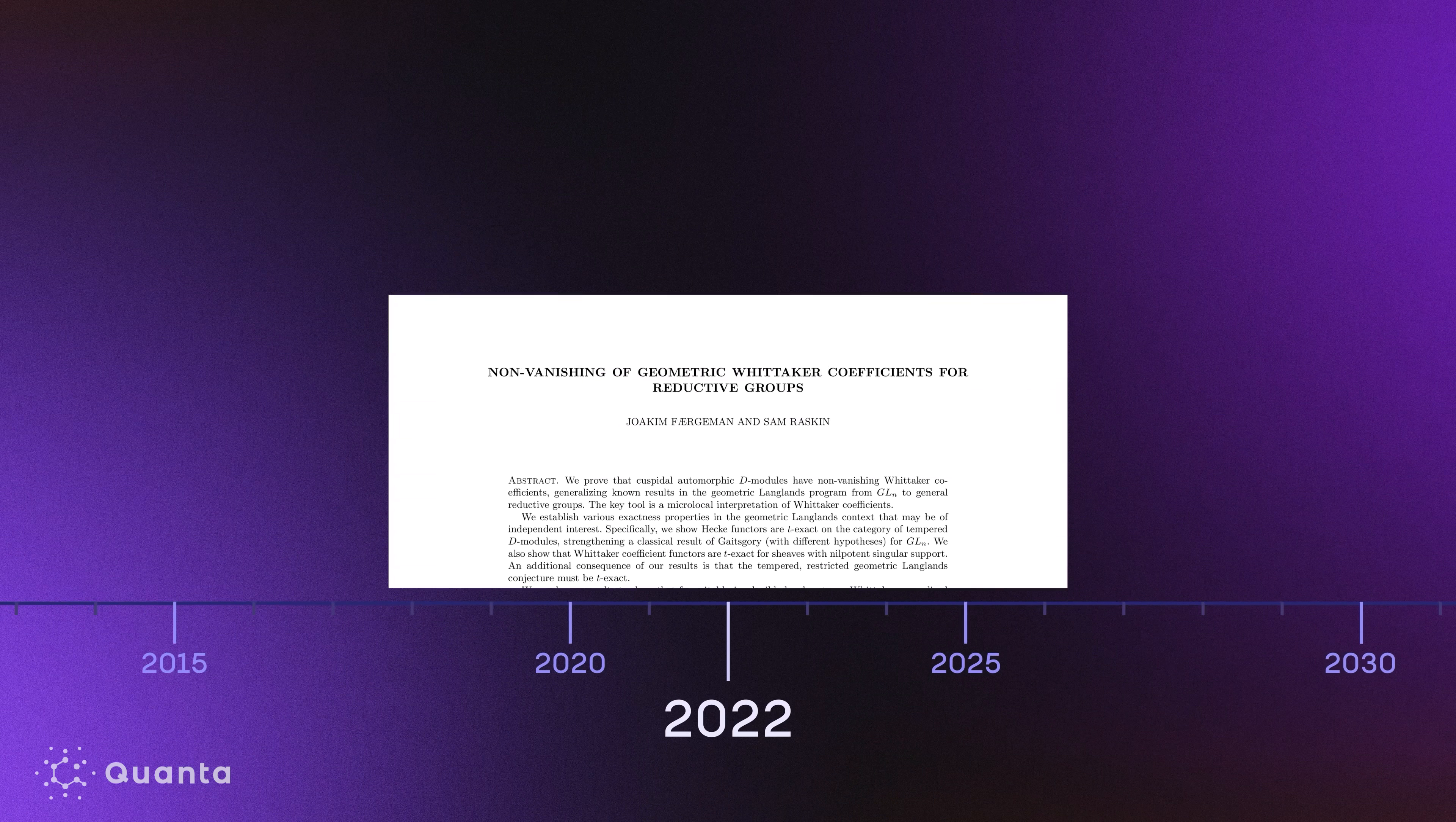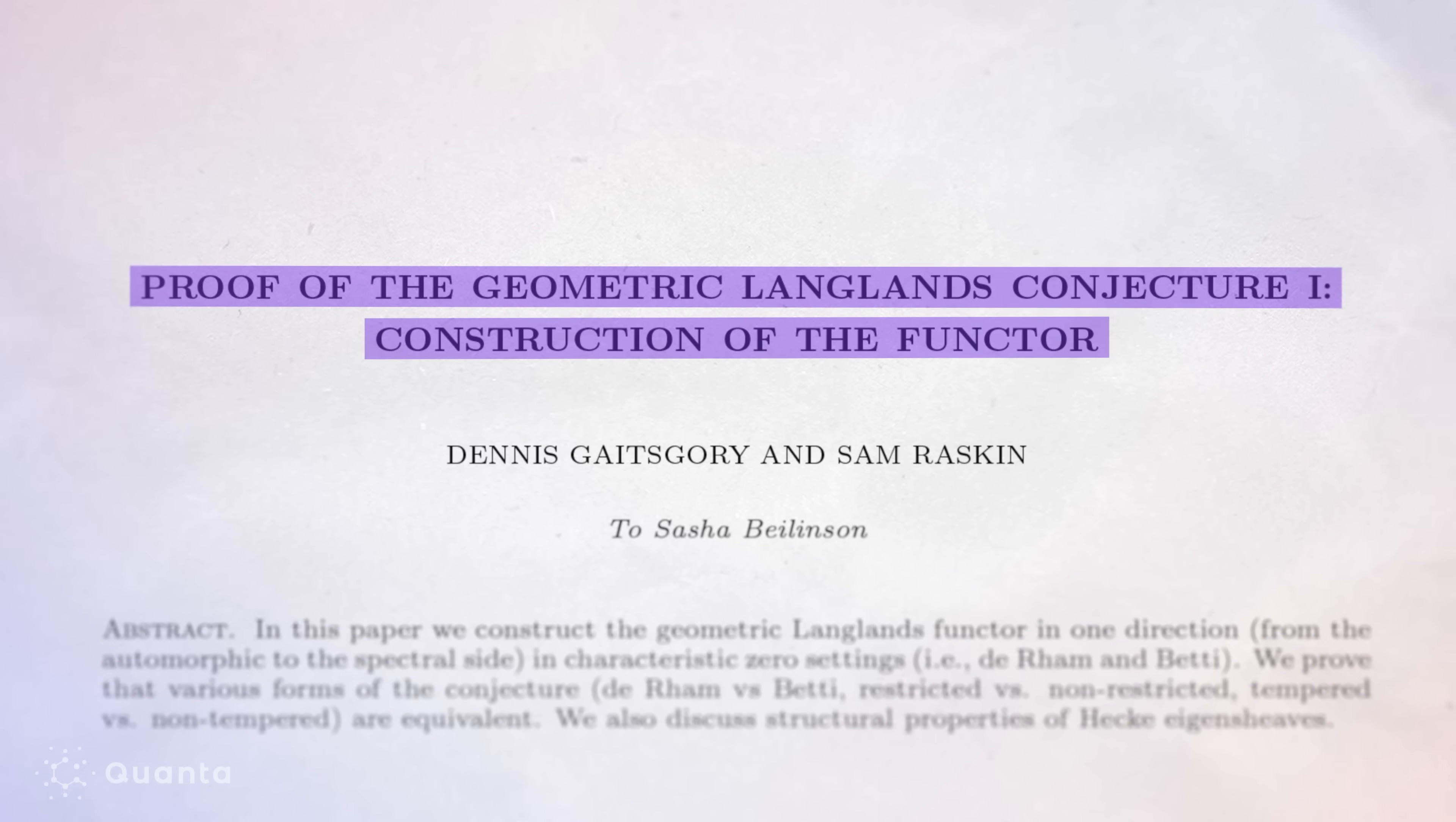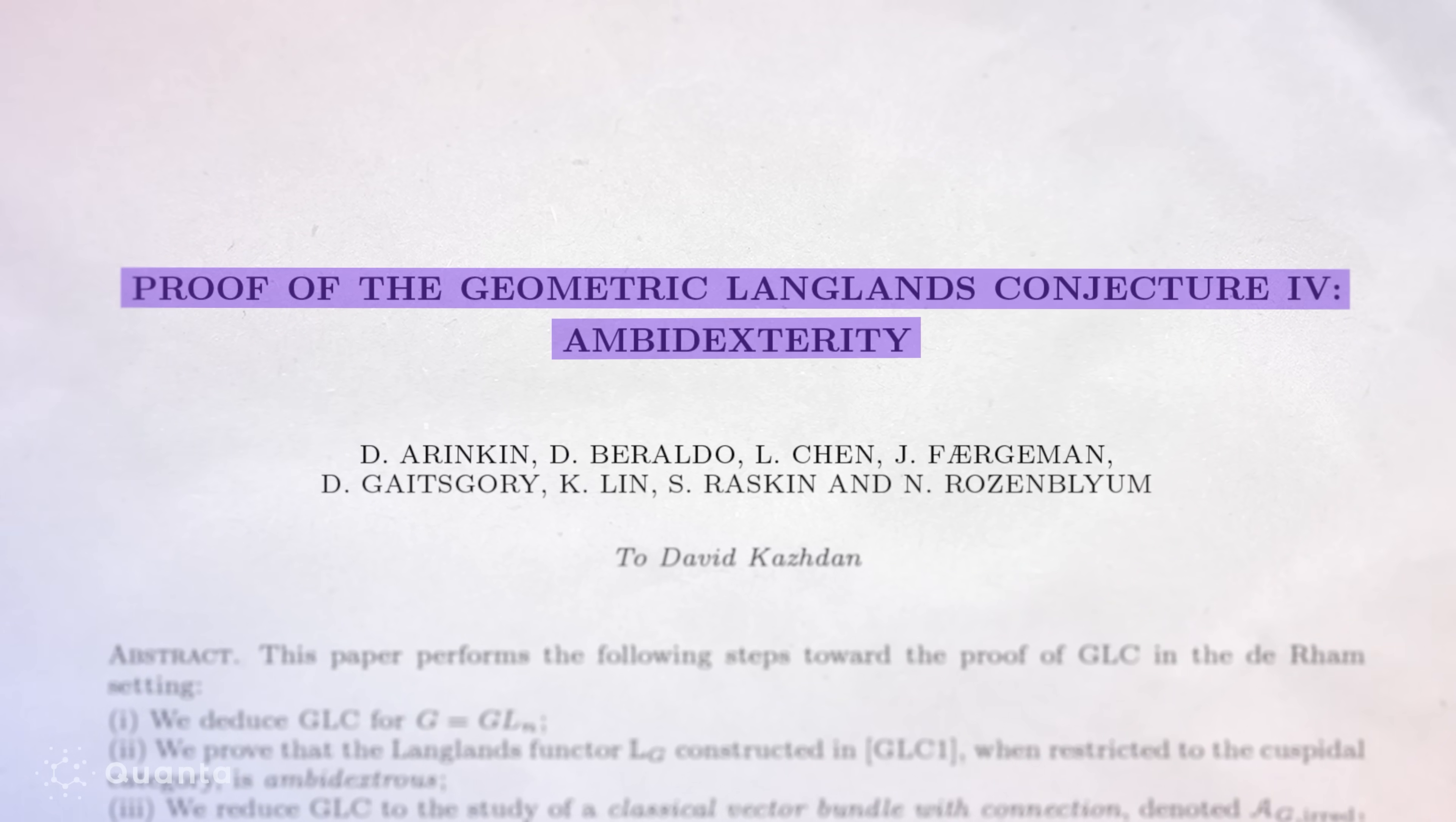In 2022, Raskin and his own graduate student finally proved this, completing Gaitsgory's fundamental diagram. They cracked this mystery, after which basically the shape of the solution became clearer. Over the course of the next two years, Gaitsgory and Raskin led a team that wrote five papers that proved the geometric Langlands conjecture.